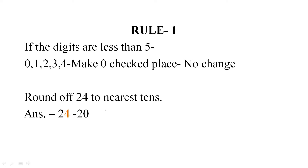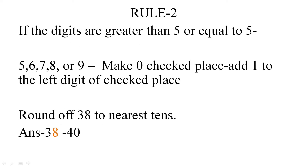The first rule is: if the digit at the checked place is less than 5 — that is, 0, 1, 2, 3, or 4 — then the checked place and all digits to its right will be converted to 0. For example, if we want to round off 24 to the nearest 10s, then we will check the place of 1s. Here the 1s place is 4. So convert 4 into 0 and you will get the number 20.